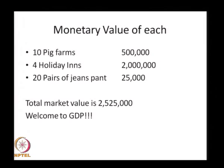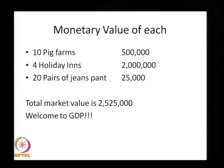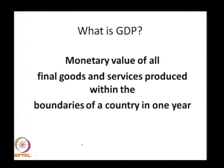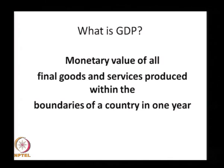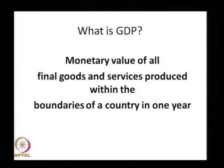Now whether it is the total market value or whether it is the value add that happens in intermediate goods and services is a question that needs to be answered. To understand the intricacies of calculating the monetary value of goods and services being produced, the most widely accepted measure of national output is the Gross Domestic Product. The definition of GDP is the monetary value of all the final goods and services produced within the boundaries of a country in a single year.